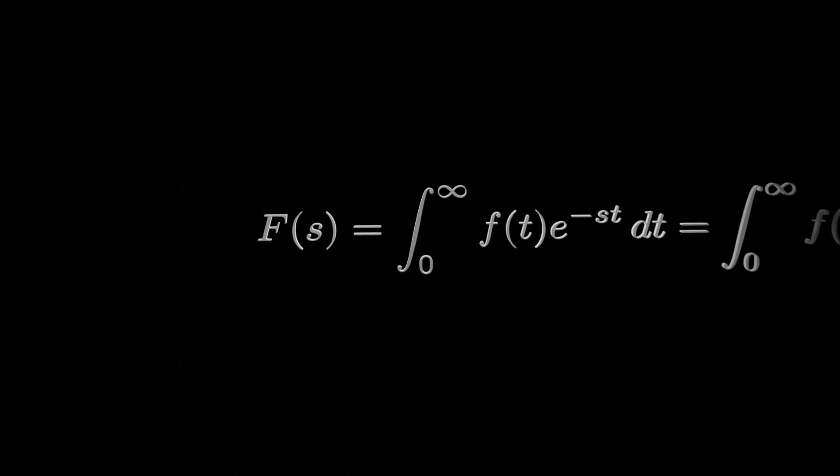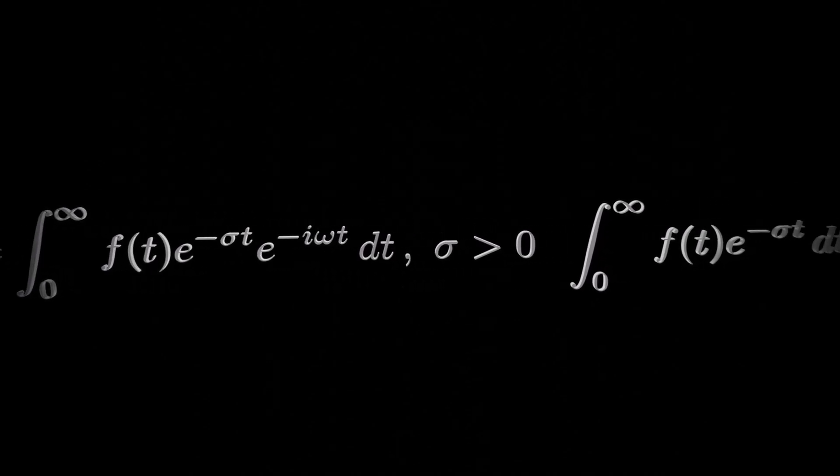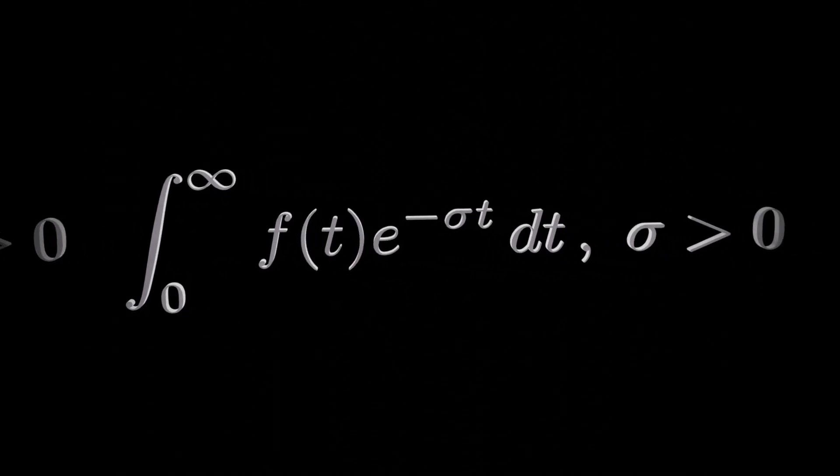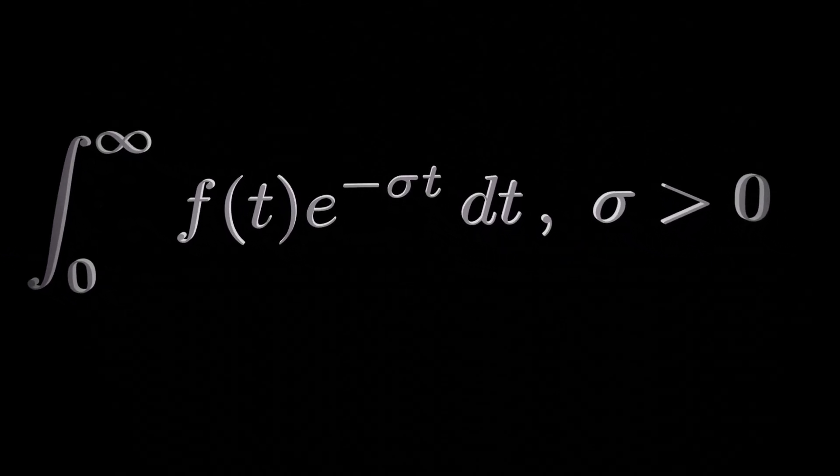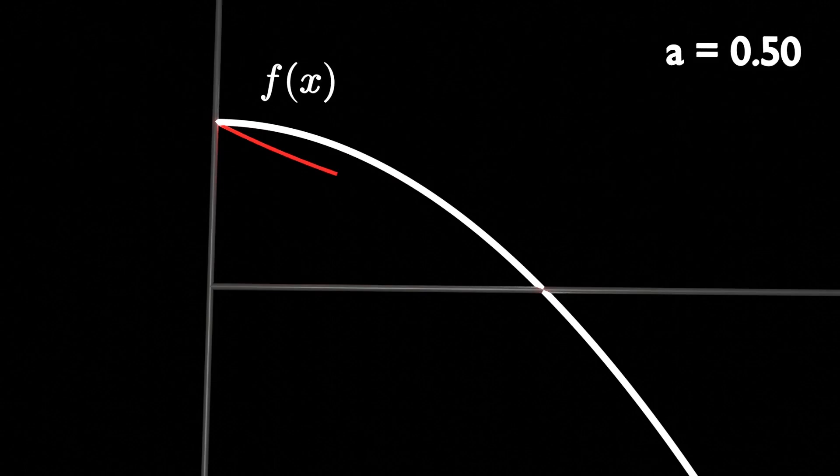And to get a better handle on what it is encoding, write the complex number in terms of its real and imaginary parts. And let's just focus on the real part first. So the real part is an exponential decay term. And when you times the function by this and then integrate it from zero to infinity, the information you're getting from this is something to do with the nature of the function before the exponential really drops off.